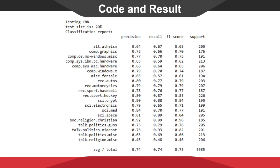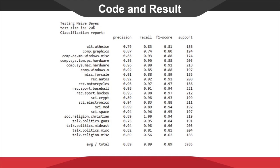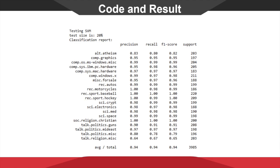First, let's look at the result of k-nearest neighbors classification. It performs very well in some specific topics such as religion and science groups. However, it fails in the talk group. One reason might be that talk does not have a specific topic, so the data could be distributed over all places in the space. For naive Bayes, we can find it works perfectly in most groups, except talk and atheism. When it comes to support vector machine, not only the talk and science groups, which were not precise enough in naive Bayes, improved a lot, but also the rest of the groups improved significantly. Some of them even approach 100%.